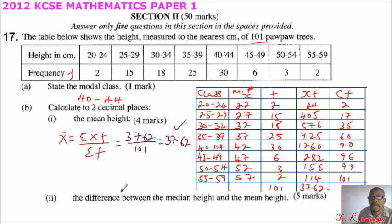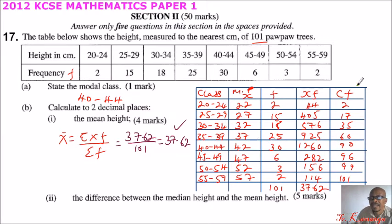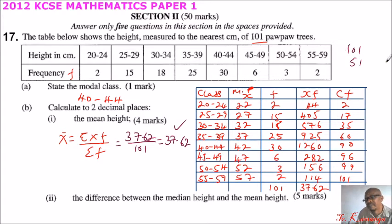For part (ii), the difference between the median height and the mean height: because there are 101 trees, the median position is the 51st value — 50 on each side. Looking at the cumulative frequencies, the 51st value lies in the class 35–39, which has a cumulative frequency of 60.